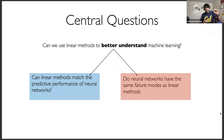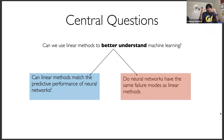The central question in this talk is: how can we use linear methods to better understand our machine learning systems? I'll break this into two parts. First: can linear methods match the predictive performance of neural networks? If they can, that tells us something about what neural networks are doing — because if a linear method gets close, it suggests neural networks aren't approximating the brain in any meaningful way. Second: do neural networks fail in the same exact ways that linear methods fail?